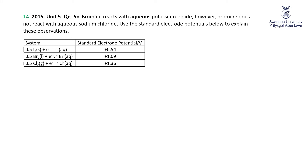Now the same table, but without the iron, since we're only interested in halogens and halides. Bromine reacts with aqueous potassium iodide; however, bromine does not react with aqueous sodium chloride. We need to use the standard electrode potentials to explain these observations. We're looking at: Br2 plus I− giving bromide and iodine — that works — versus Br2 plus Cl− giving bromide and chlorine — that doesn't work.